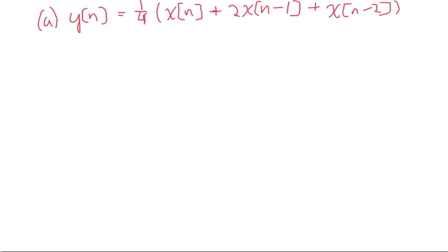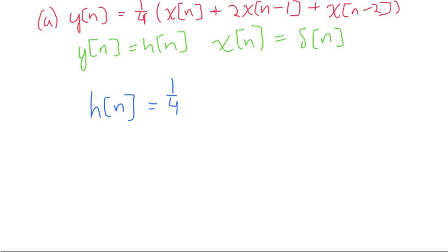So for part A we were asked to find the impulse response of the system. To do that we can let y(n) equal h(n) and x(n) equal delta(n). So from that we get h(n) equals one-fourth times delta(n) plus two times delta(n-1) plus delta(n-2).